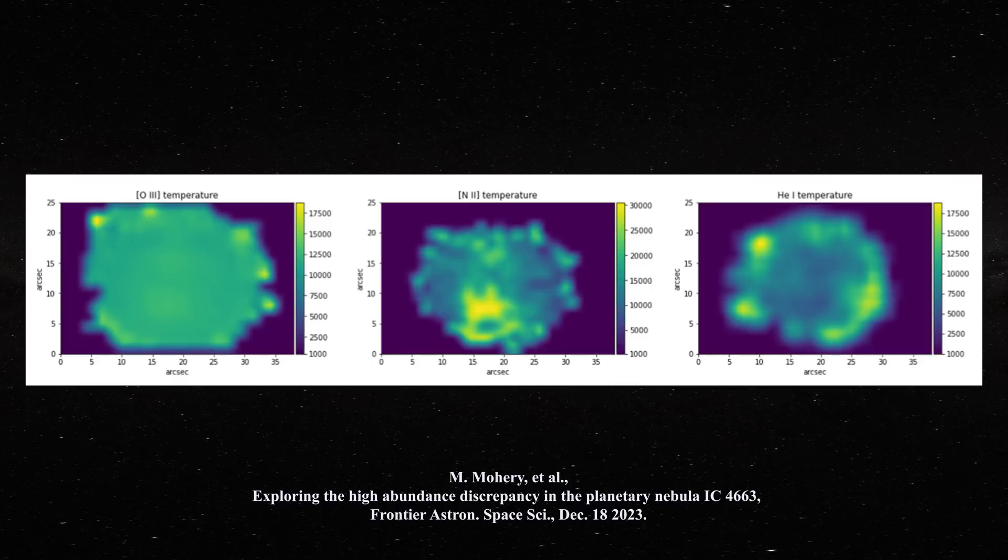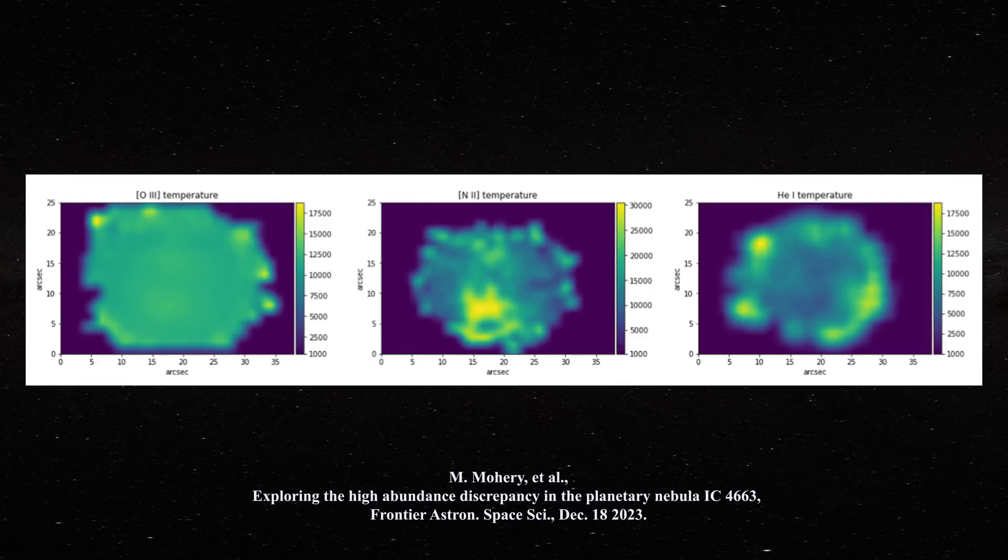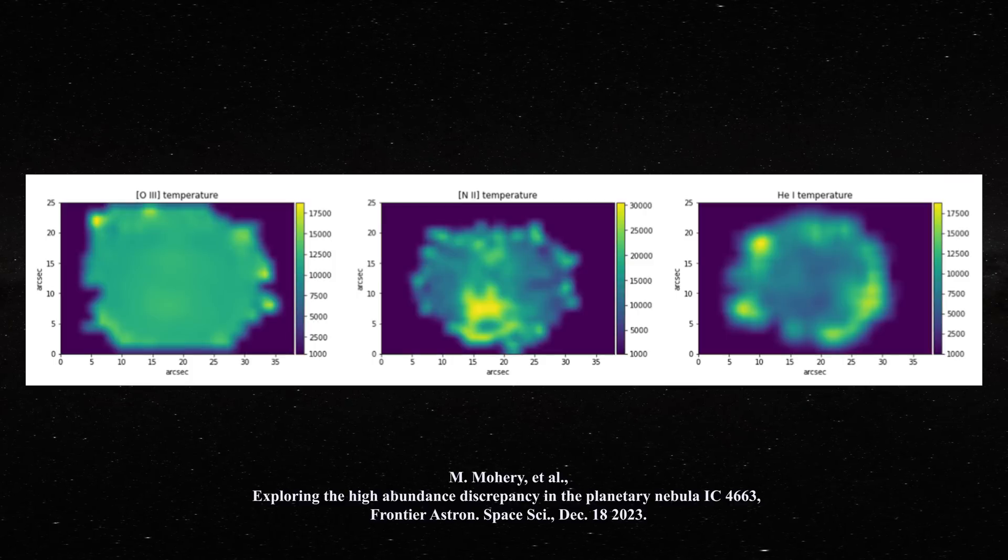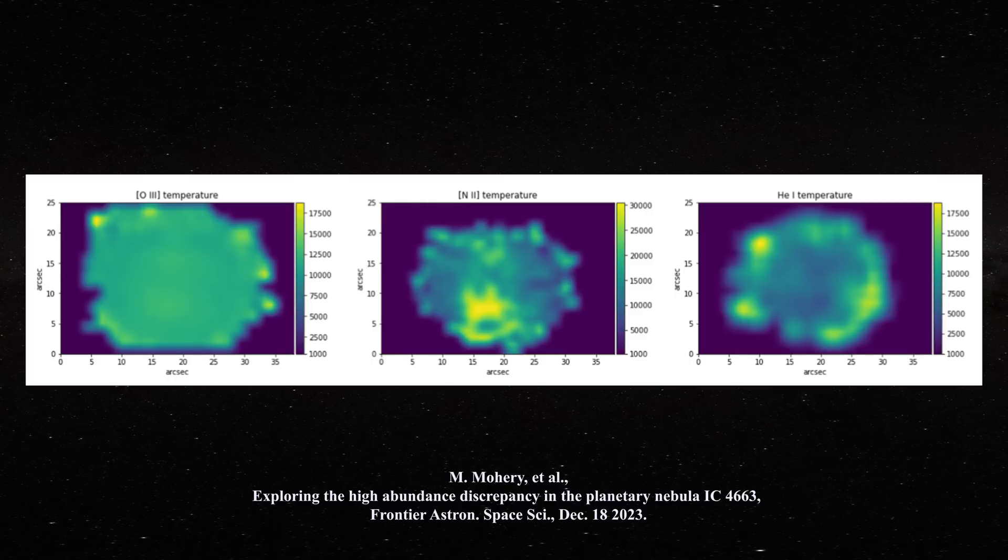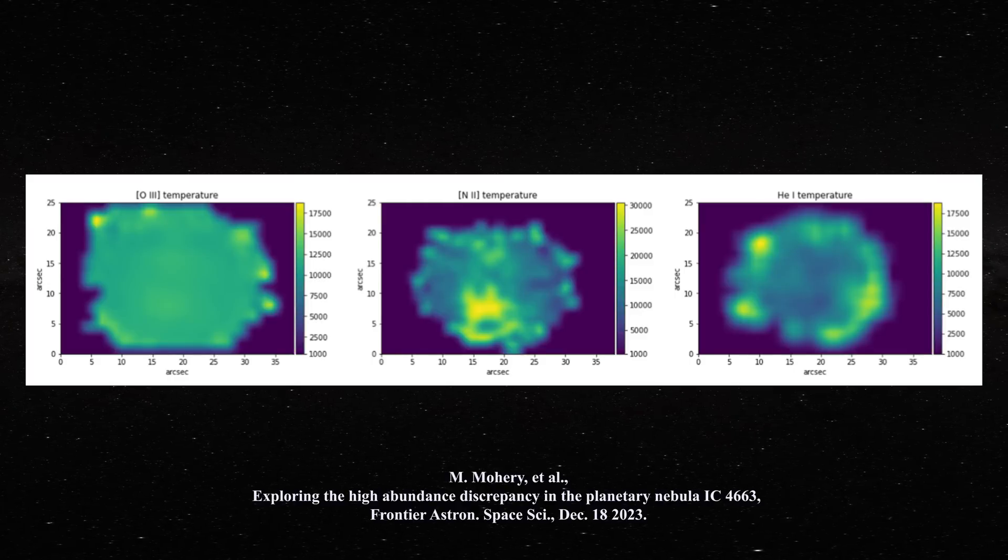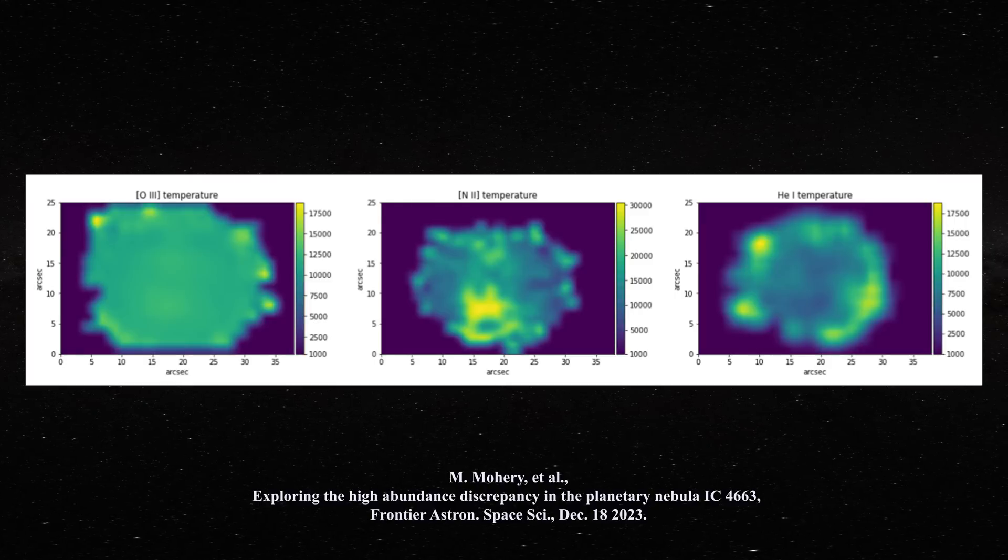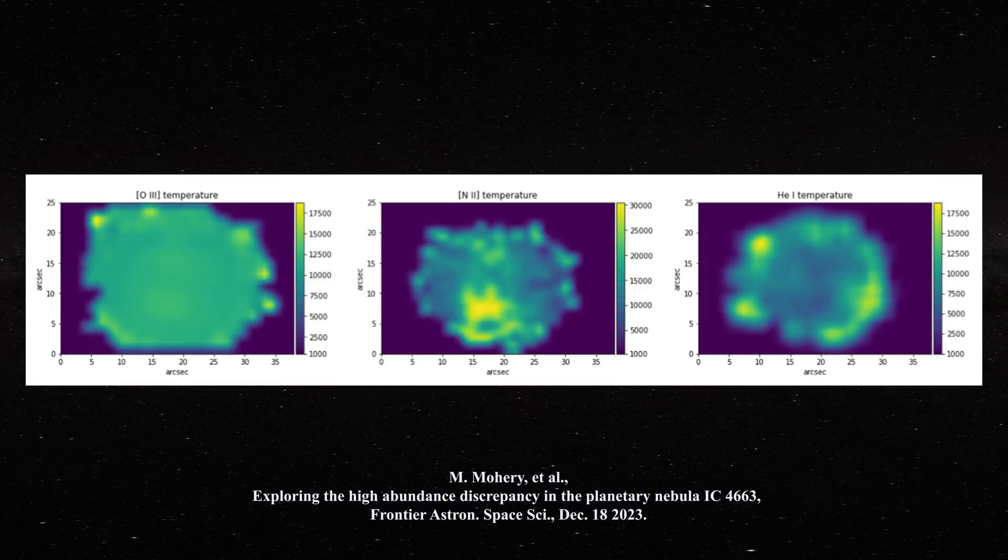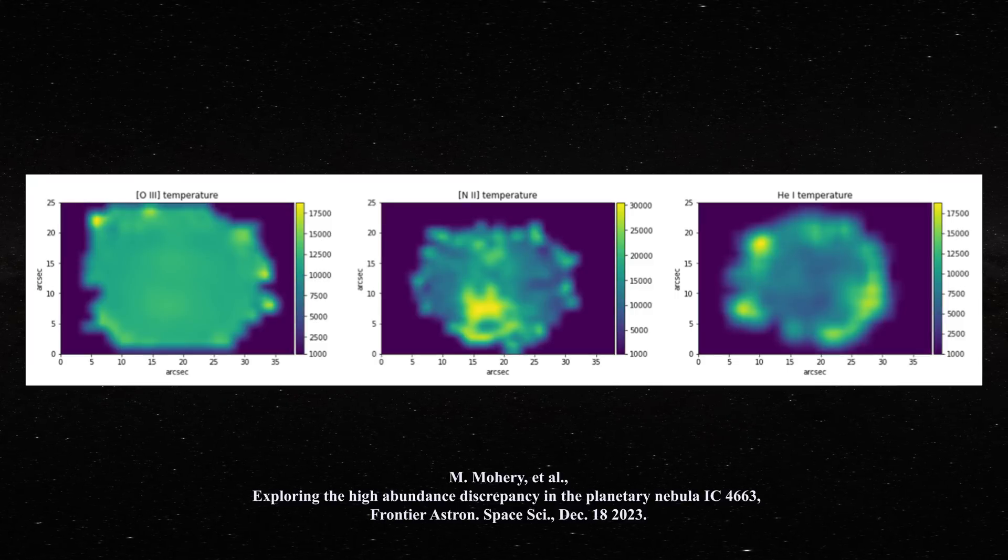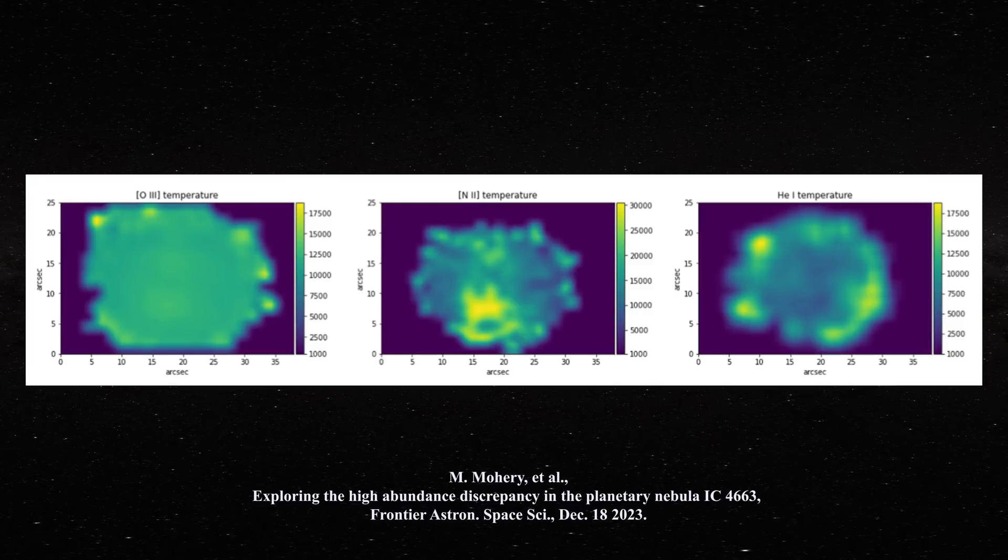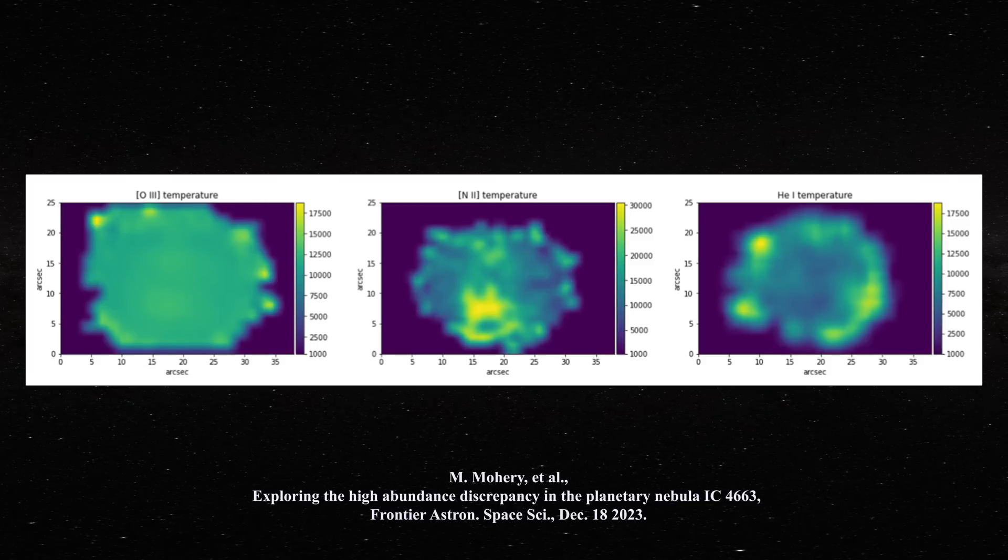Next, have a look at these three images from the same paper illustrating electron temperature maps obtained using three ions, namely the forbidden lines from oxygen 3 and nitrogen 2, and an allowed line from helium 1. Note how the central portion of the nitrogen 2 image is reflecting temperatures of about 30,000 Kelvin. But in the helium image, temperatures of less than 7,500 Kelvin are indicated for the same region. Clearly, these temperatures cannot be real, and this is a sure sign that chemistry and not random processes are guiding the formation of ions in these regions.